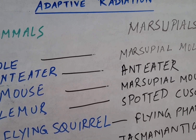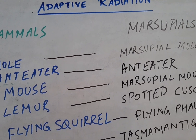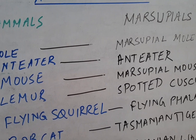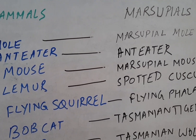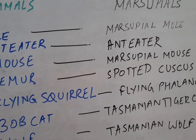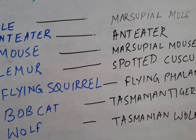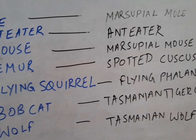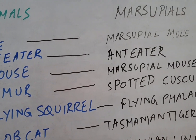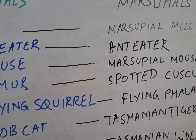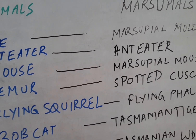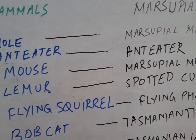You can see that the mole resembles the marsupial mole, the ant eater resembles the marsupial ant eater, the mouse resembles the marsupial mouse, the lemur resembles the spotted cuscus, the flying squirrel resembles the marsupial flying phalanger, and the bobcat resembles the Tasmanian tiger cat. The placental wolf resembles the Tasmanian wolf. These placental animals resemble some features of marsupial animals and live in the same geographical area. This is called convergent evolution.